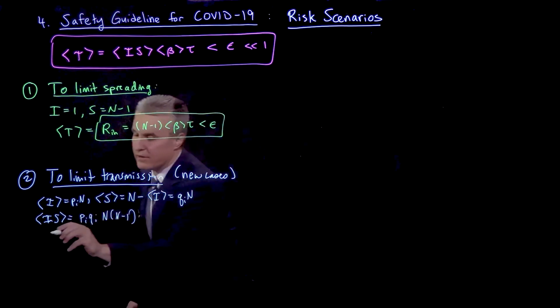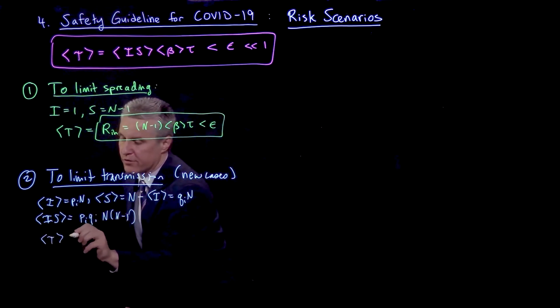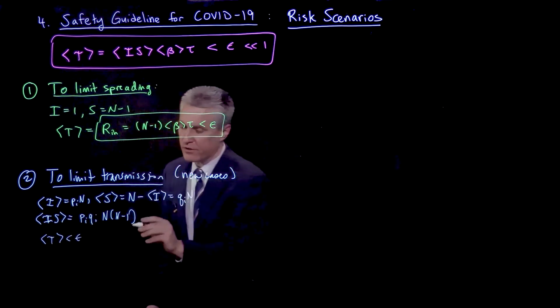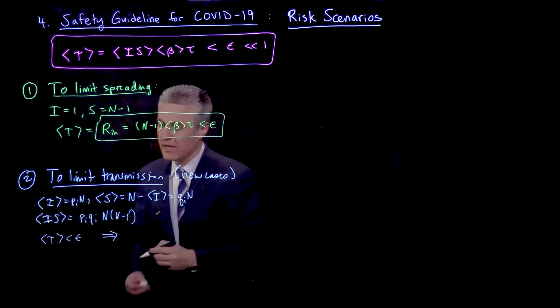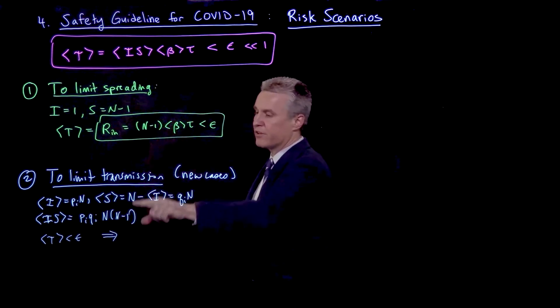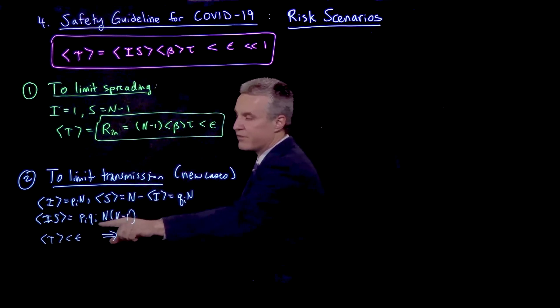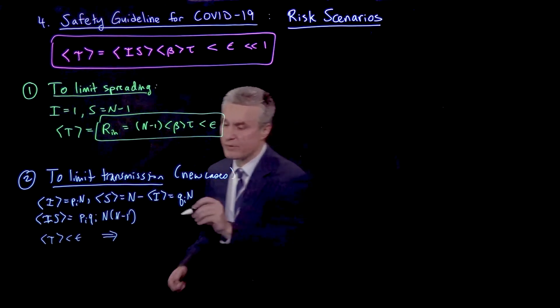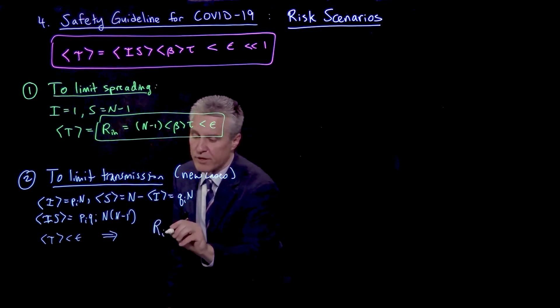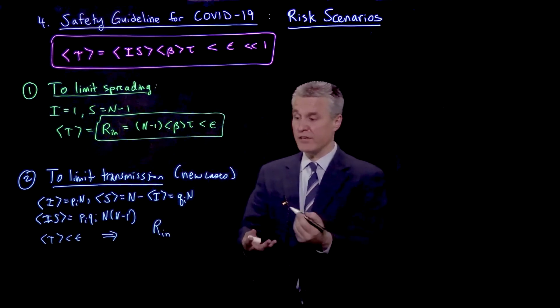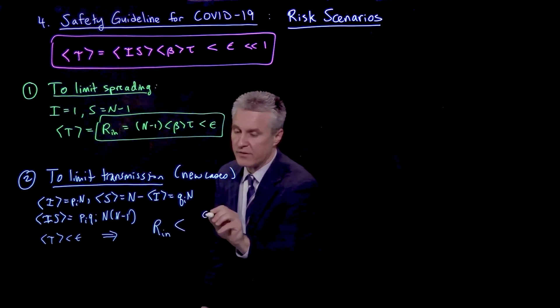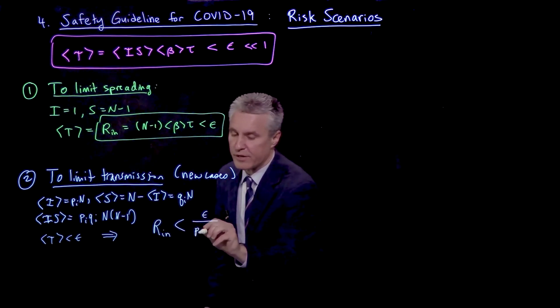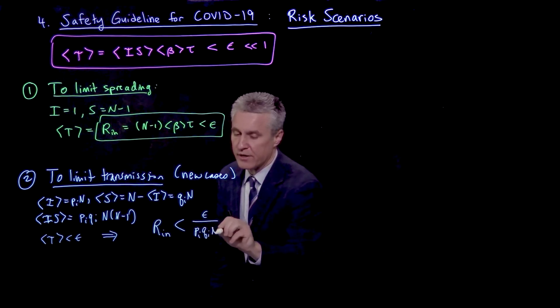So now when we write that we'd like the expected number to be much less than epsilon, the expected total number of transmissions, notice instead of just an N minus 1 like we had before, we have these additional factors P_I Q_I N. So in this case, we can write our safety guideline taking into account the prevalence as epsilon divided by P_I Q_I N.